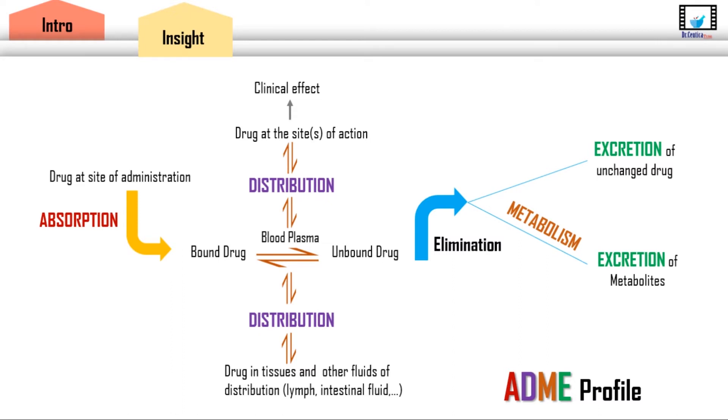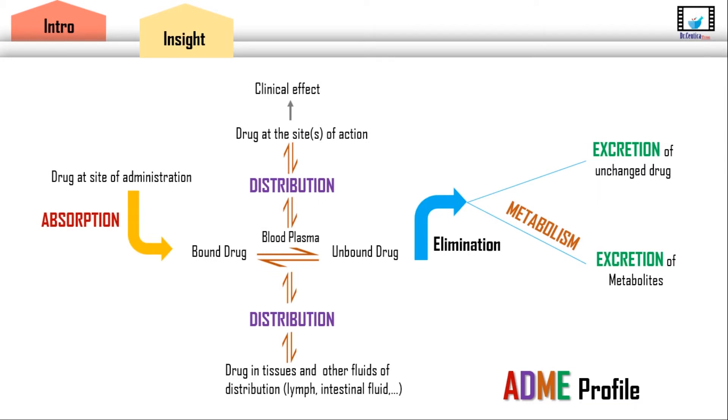This process is called absorption. Now the drug is in the bloodstream, and within blood there are plasma proteins that might have affinity to bond with certain drugs. So some drugs might not be found freely circulating in blood, but bound to plasma proteins, which makes their distribution different.